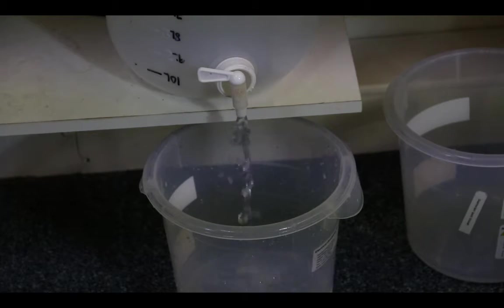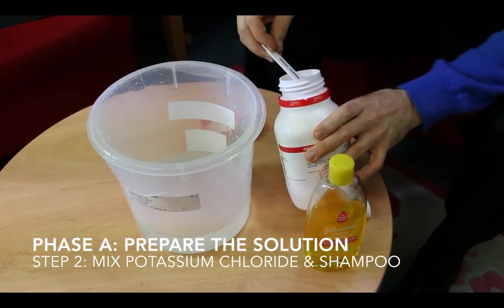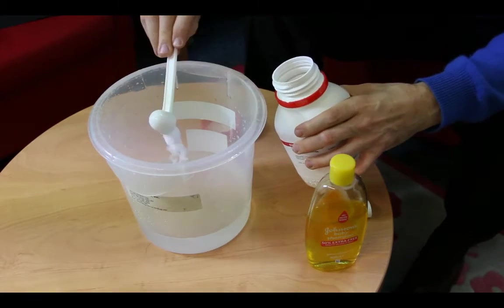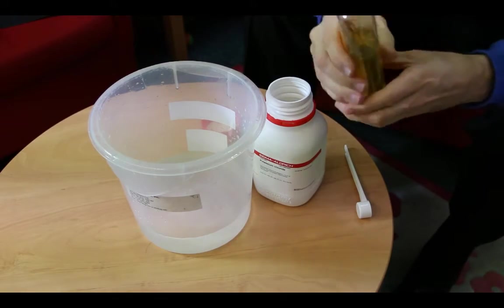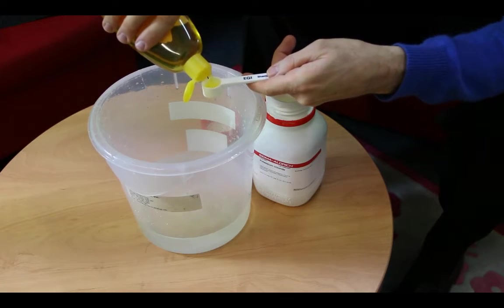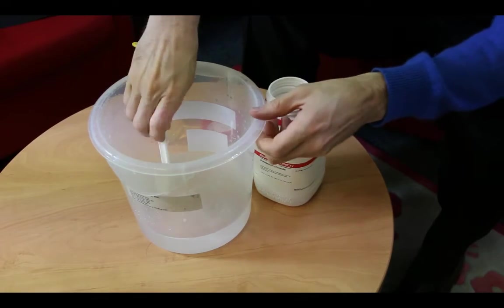You want to start out by filling a bucket with one liter of distilled water. Next, you're going to mix in potassium chloride to increase the electrical conductance. You're also going to mix in Johnson's baby shampoo to soften the scalp and decrease electrical impedance. Be sure to mix thoroughly.